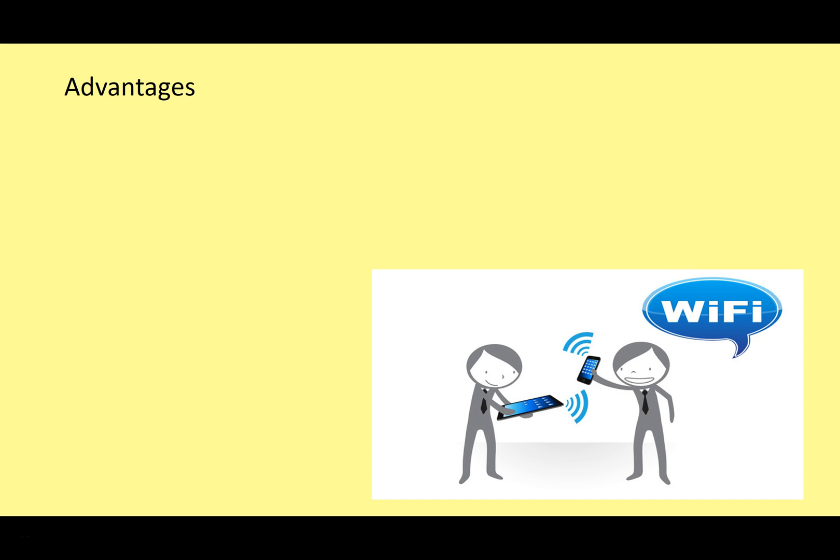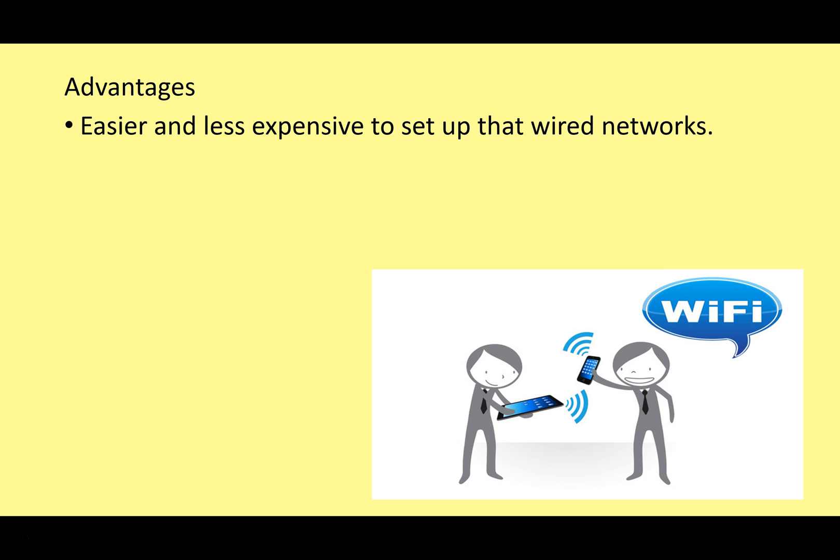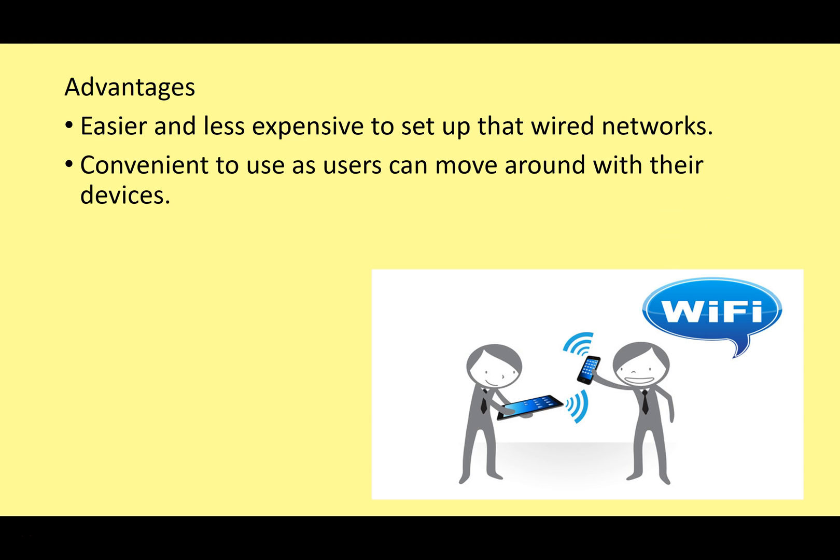So why do we like to use Wi-Fi? It's easier and less expensive to set up than a wired network. Partial and fully mesh networks are quite expensive in a wired system because of all the cables and switches. With a wireless network you don't need any of that — just a router and an access point and you're good to go.